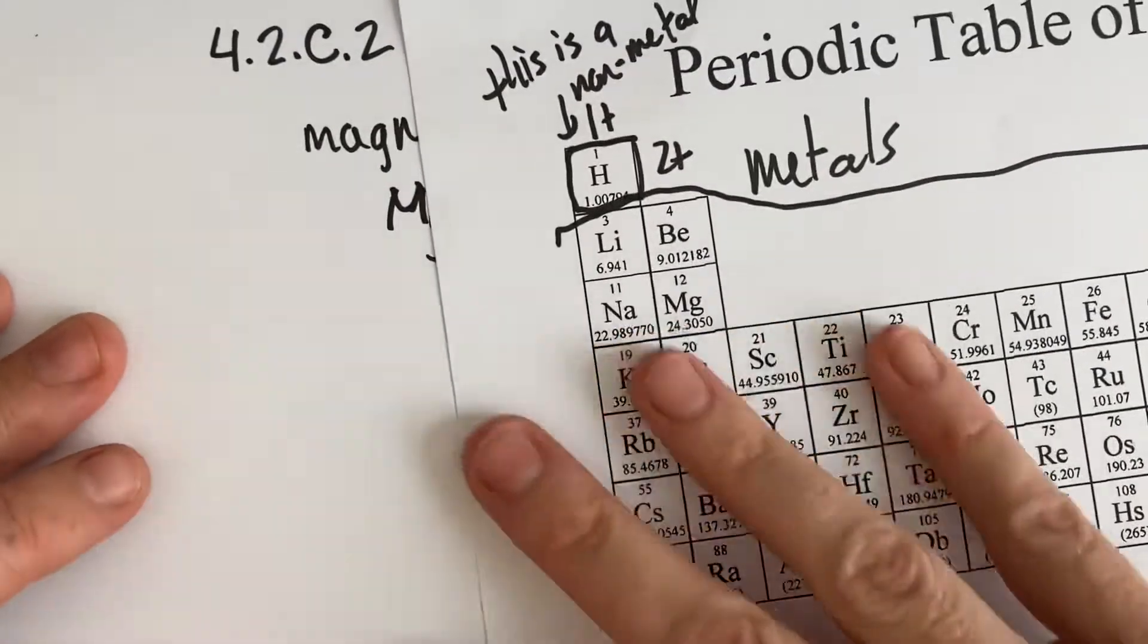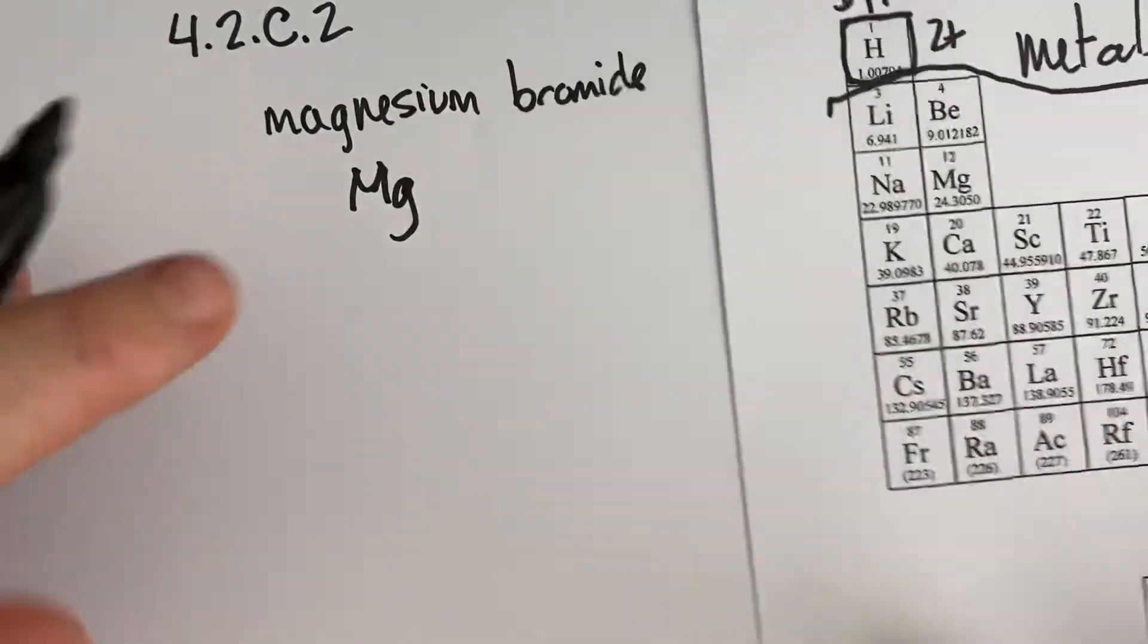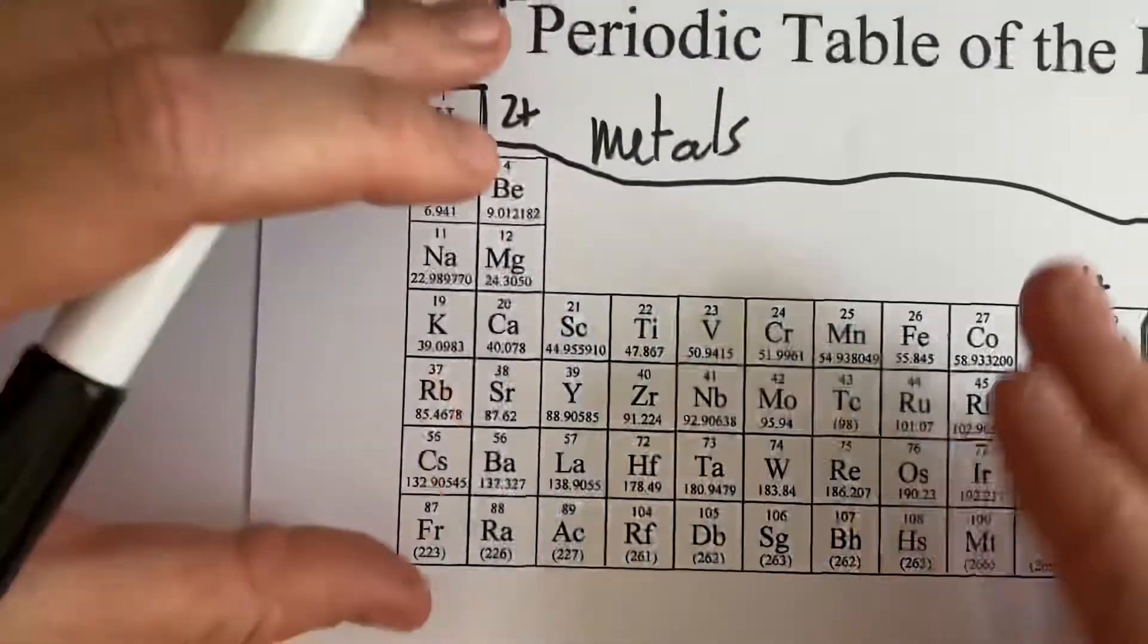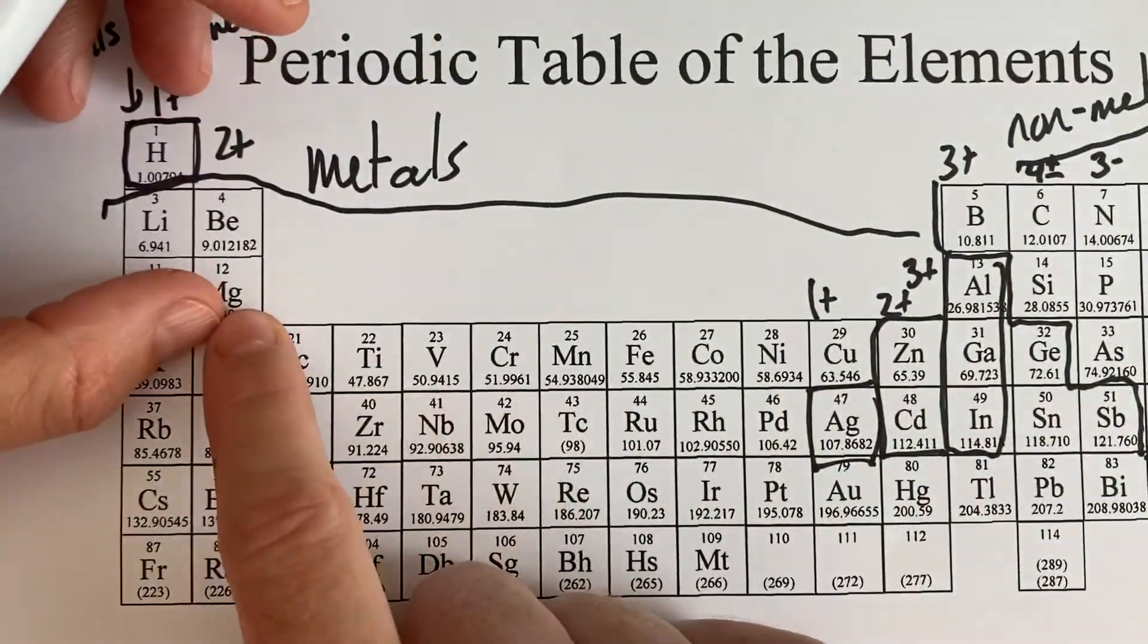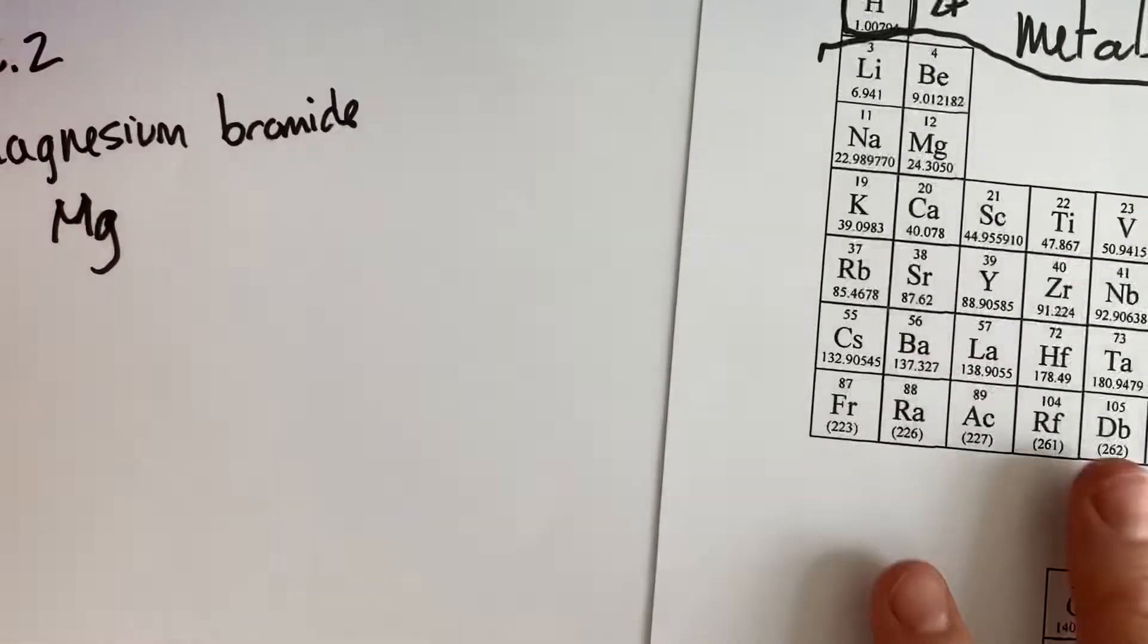We should also be paying attention to the fact that this is a metal, and this is a non-metal. So over here we have metals, over here we have non-metals. So magnesium is right here, bromide is right here. That's going to be an ionic compound.